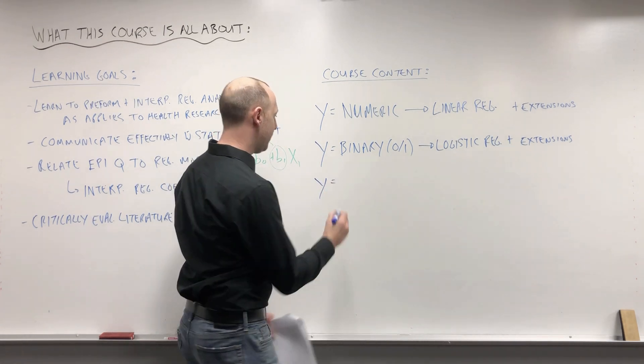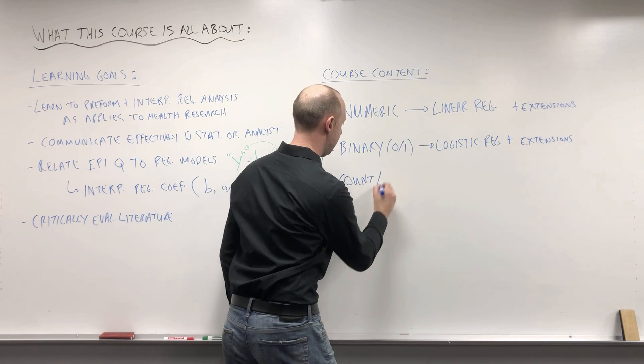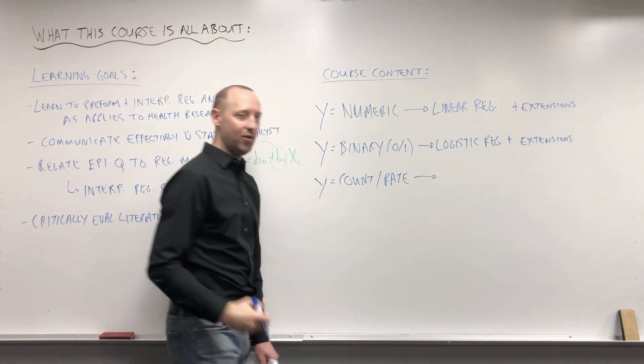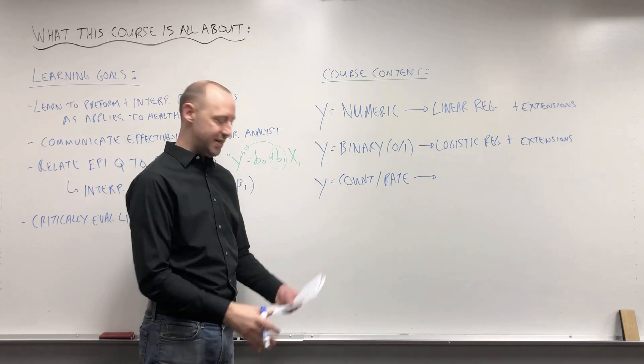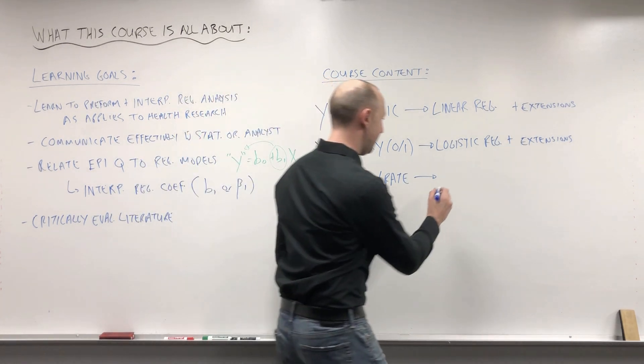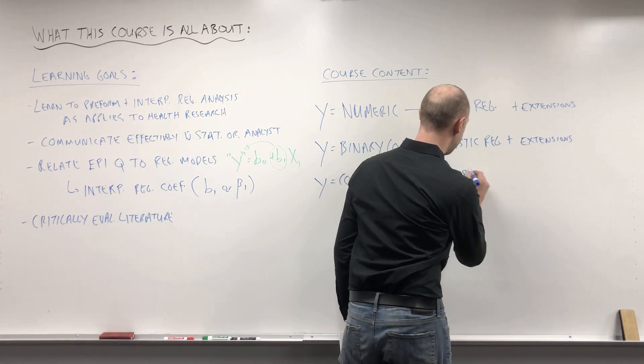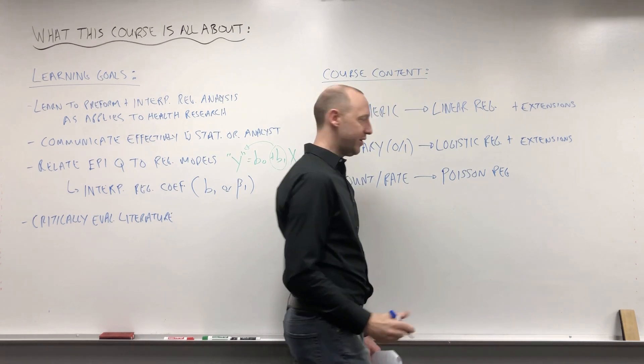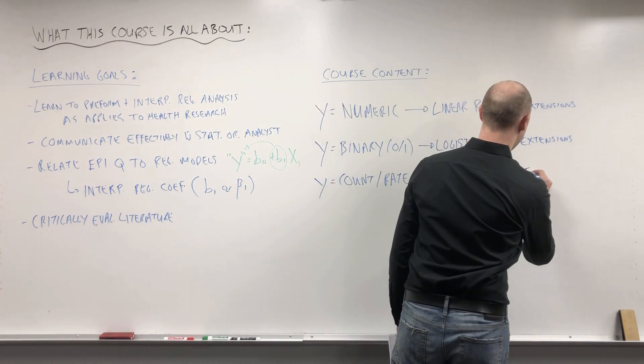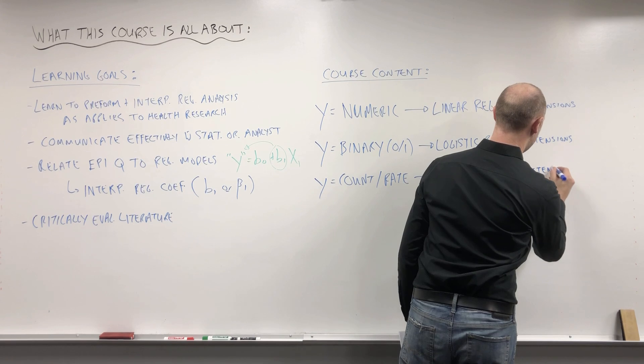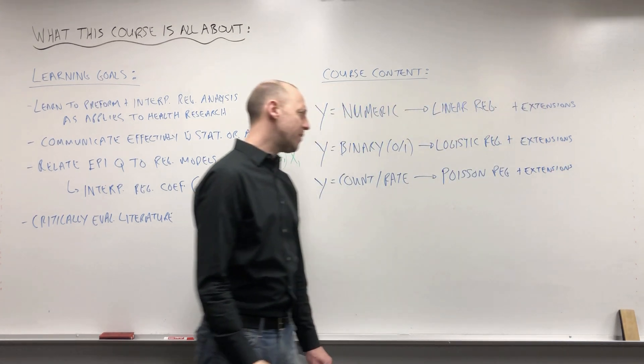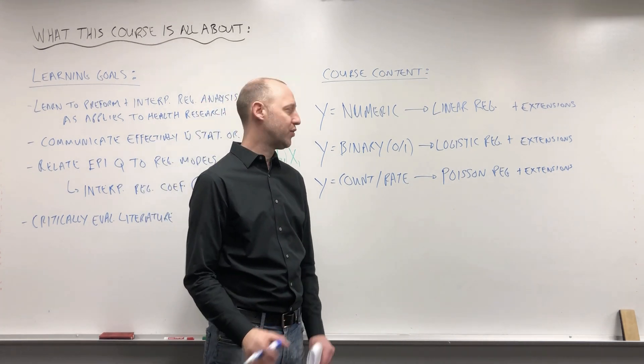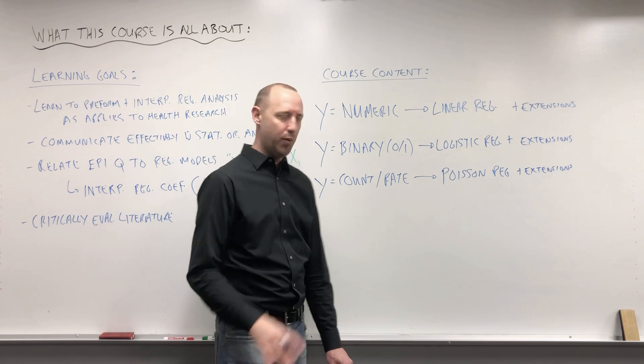Then we're going to move into outcomes that are counts or rates - so person-time data like how long until some event occurs, birth rates, death rates, things like these. To do that we're going to look at Poisson regression, also sometimes referred to as log-linear regression, and again some extensions. We might talk about zero-inflated Poisson regression or negative binomial regression, again just kind of pointing to those.